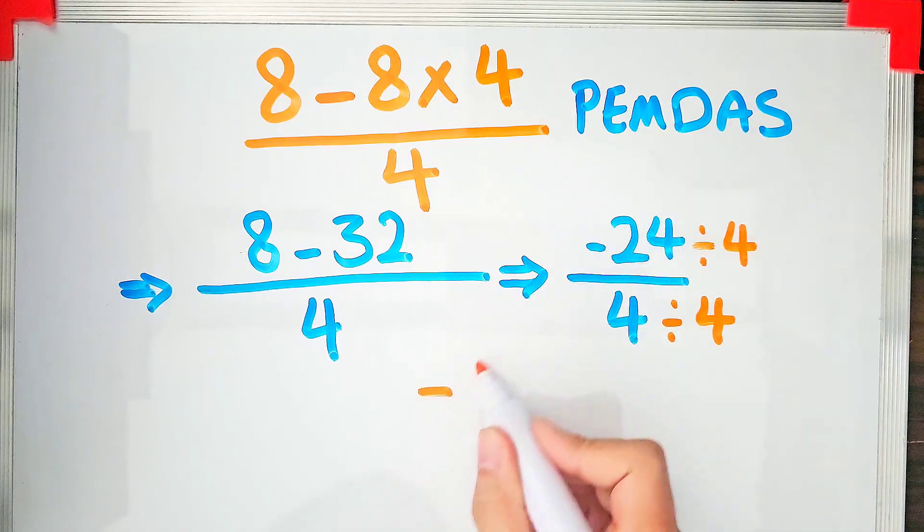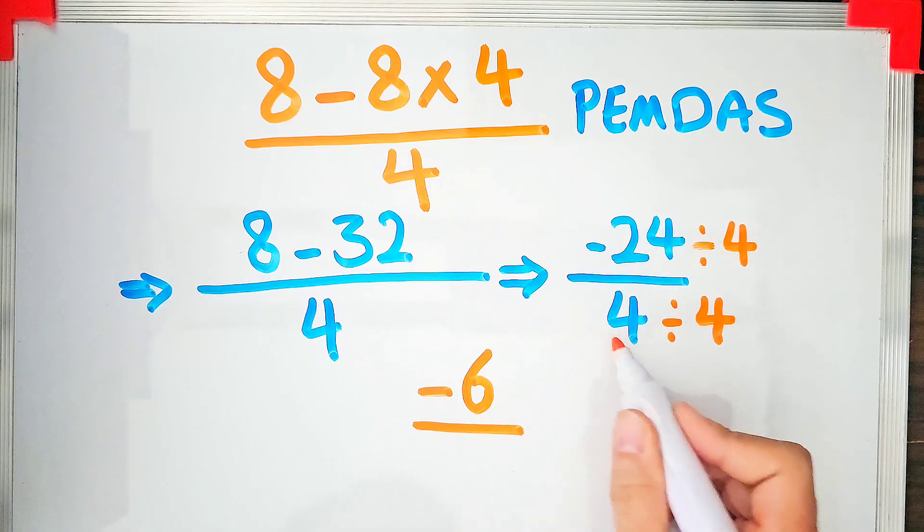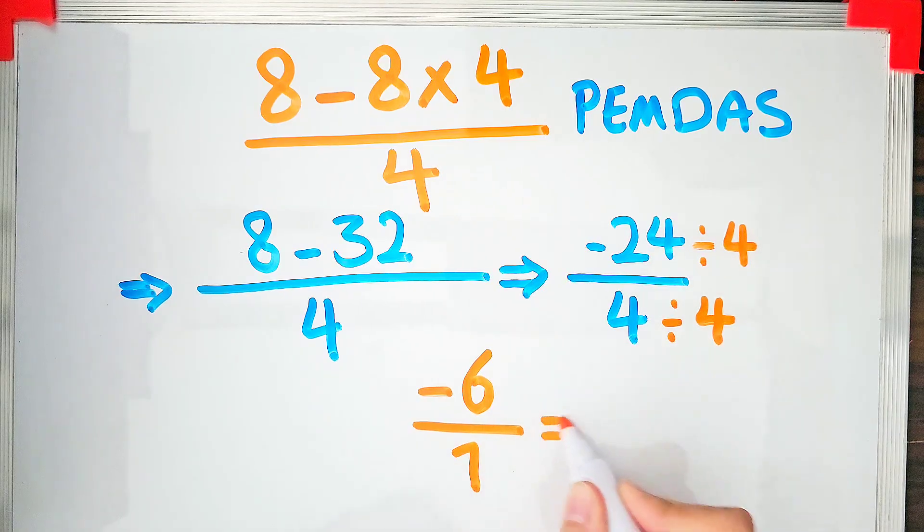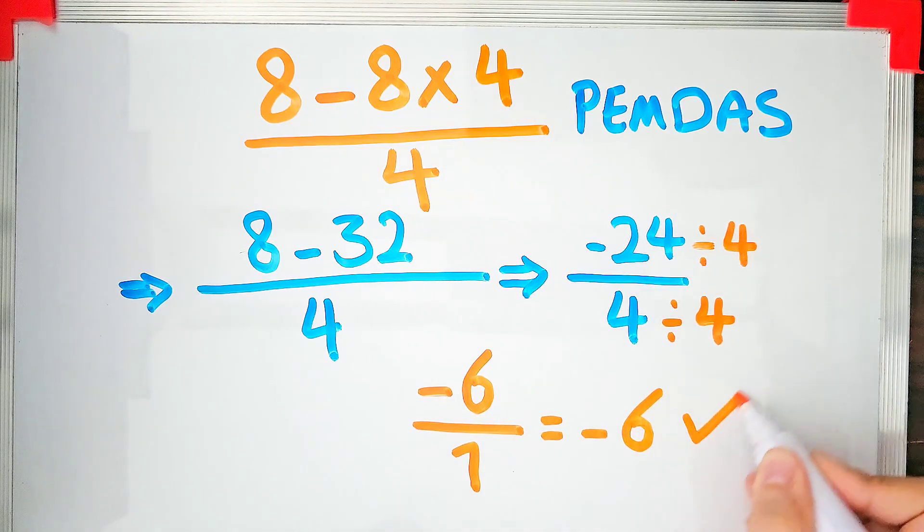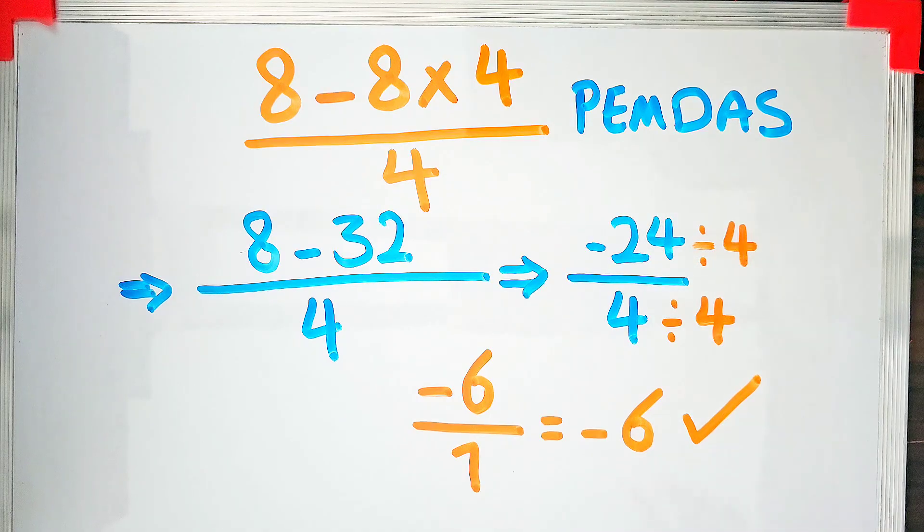After we simplify, we get the final answer: negative 6 divided by 1 equals negative 6. Thanks guys for watching, please subscribe to the channel and leave a comment. Goodbye!